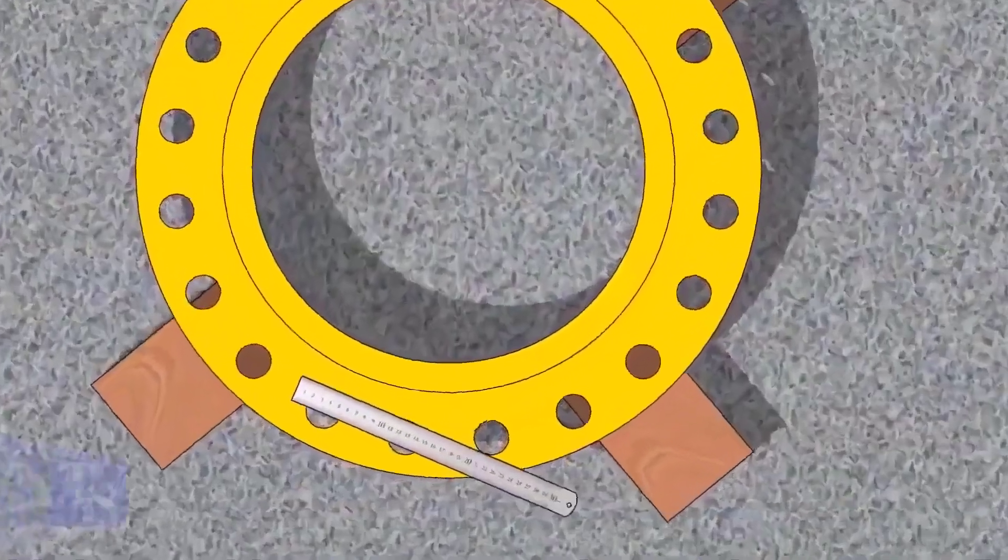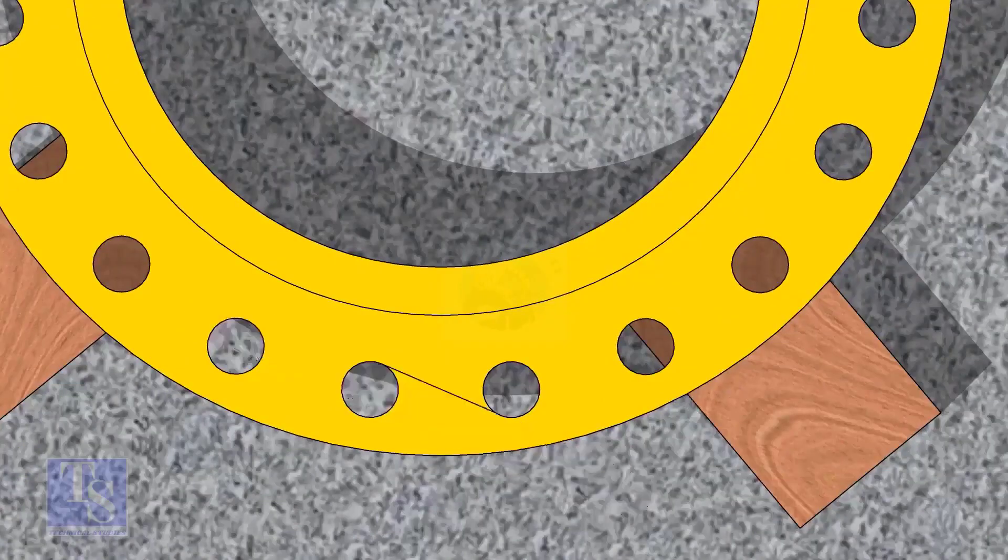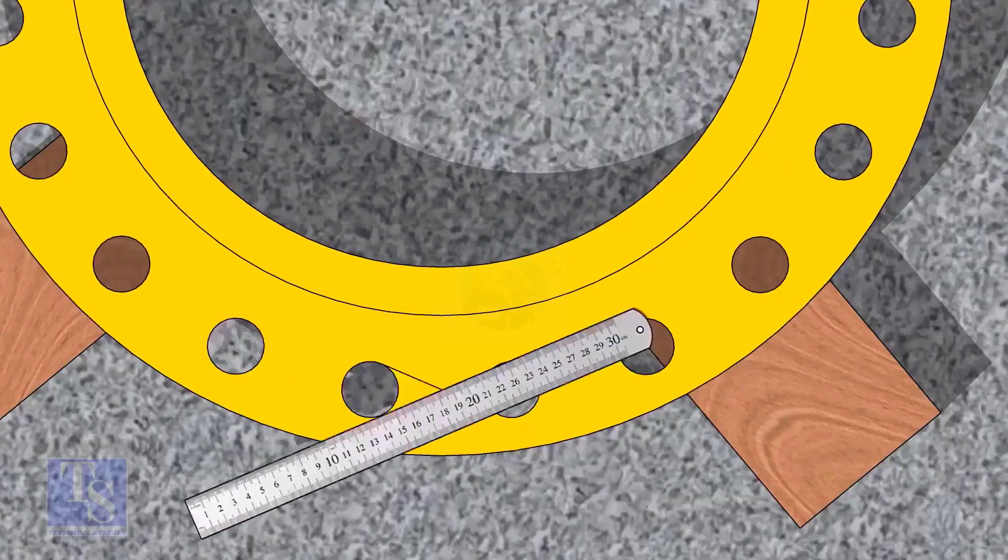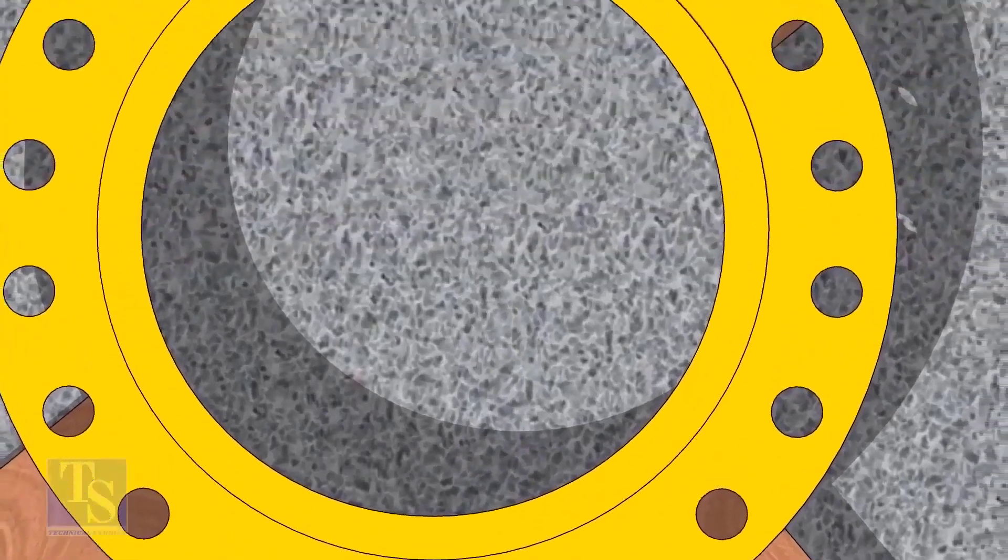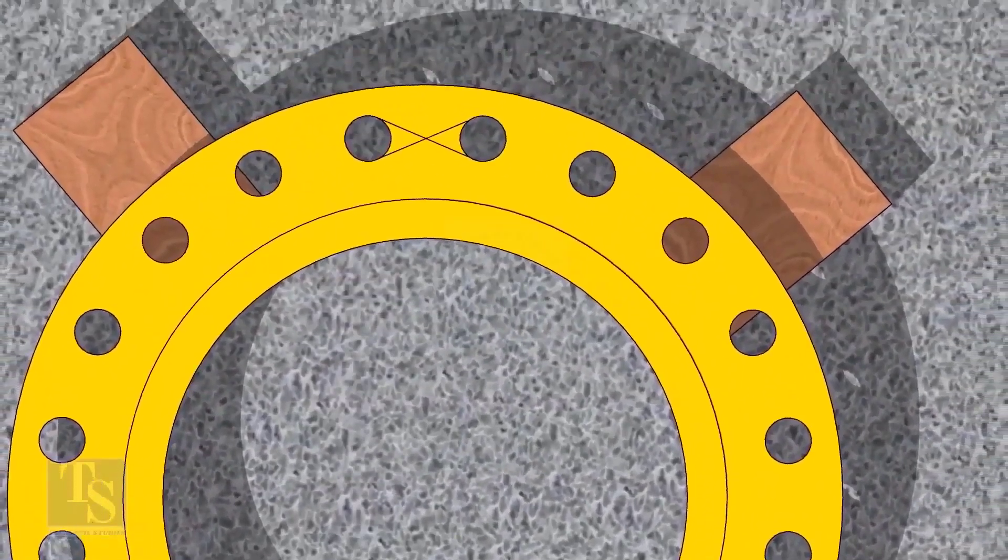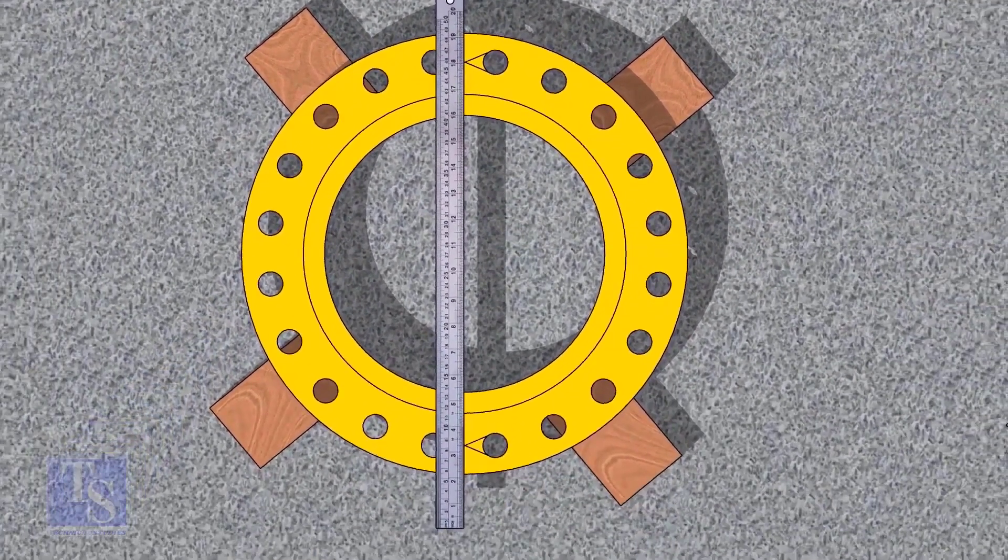Let us mark the center line of the flange. Draw tangential lines of two adjacent holes. The intersection of the lines is the center of these holes. Draw the center of the two holes on the opposite side. Draw the center line of the flange as shown.